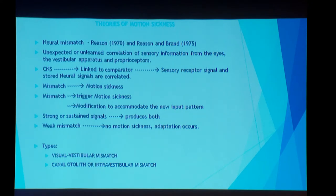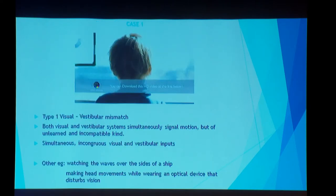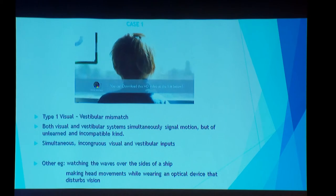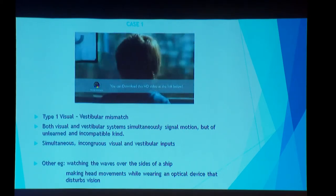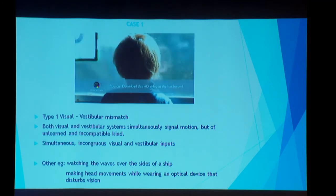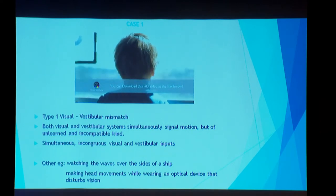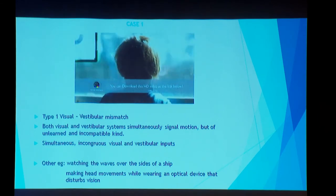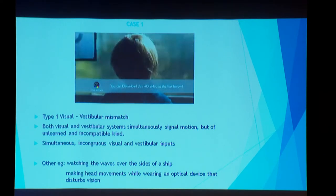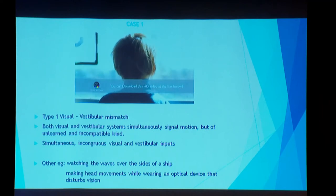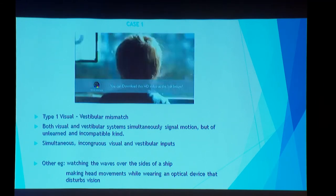There are two kinds of mismatches: visual-vestibular and intra-vestibular. Intra-vestibular is the mismatch between inputs from the canals and the otolithic organs. In the first type of visual-vestibular mismatch, you are sitting in a vehicle looking outside. You see the environment moving, while the vehicle is taking turns and traveling at different speeds. Your vestibular inputs and visual inputs are happening simultaneously but not in harmony. If this is not a learned or habituated response, it manifests as motion sickness.